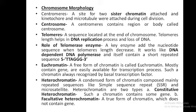Heterochromatin contains forms of chromatin composed mainly of repeated sequences like simple sequence repeats and microsatellites. Heterochromatin is of two types: constitutive heterochromatin — such chromatin contains some genes which are expressed under certain conditions — and facultative heterochromatin — a true form of heterochromatin which does not contain any kinds of genes.